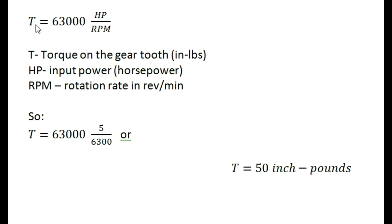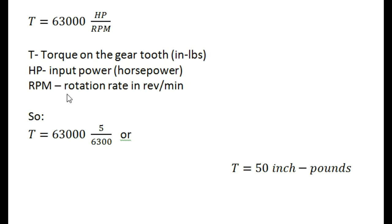We can determine the forces using this equation, which says that torque is equal to 63,000 times horsepower divided by RPM. In this equation, torque is expressed in inch-pounds, the power input is expressed in horsepower, and the rotation rate is expressed in revolutions per minute. Torque is the way that force is expressed in a rotating system, calculated by multiplying the force applied times the distance from the center of rotation to the point where the force is applied. It's typically expressed in the English system in foot-pounds or inch-pounds.